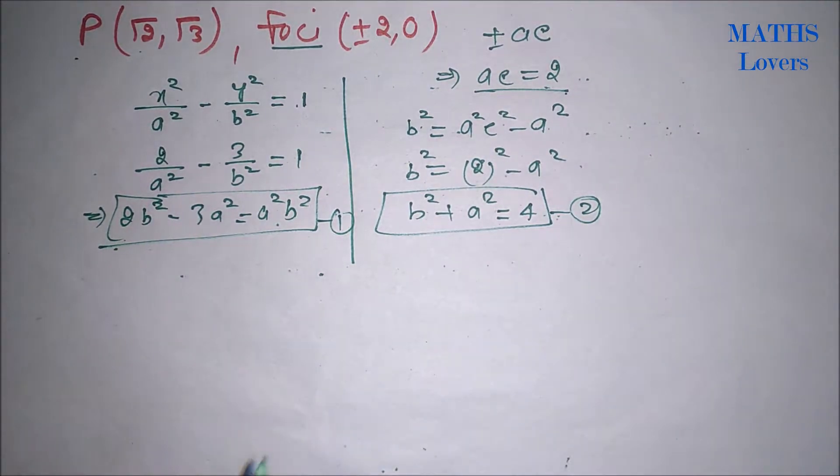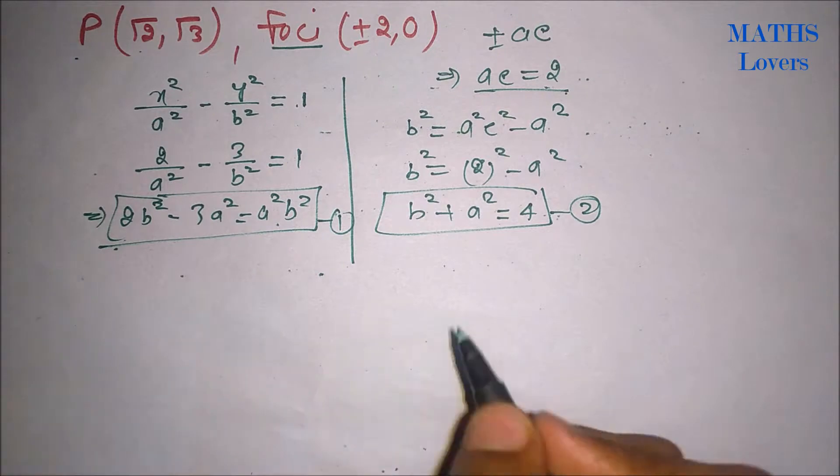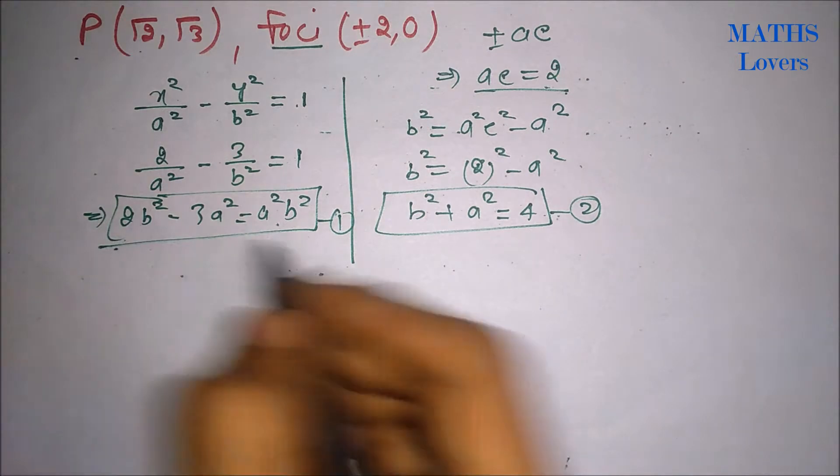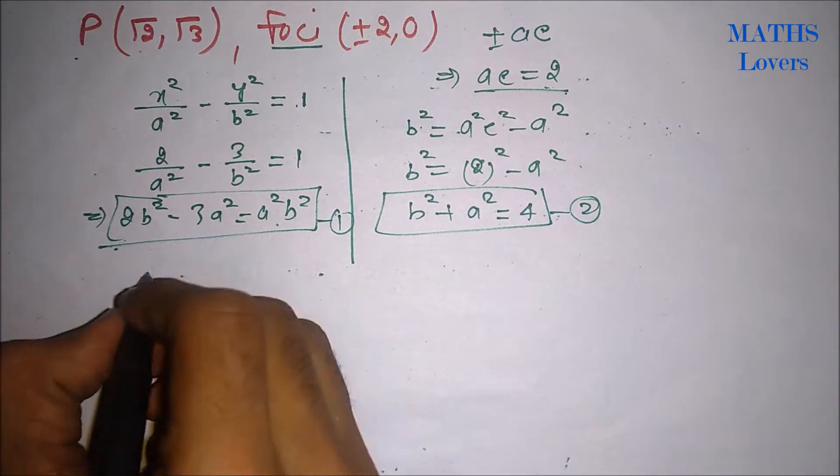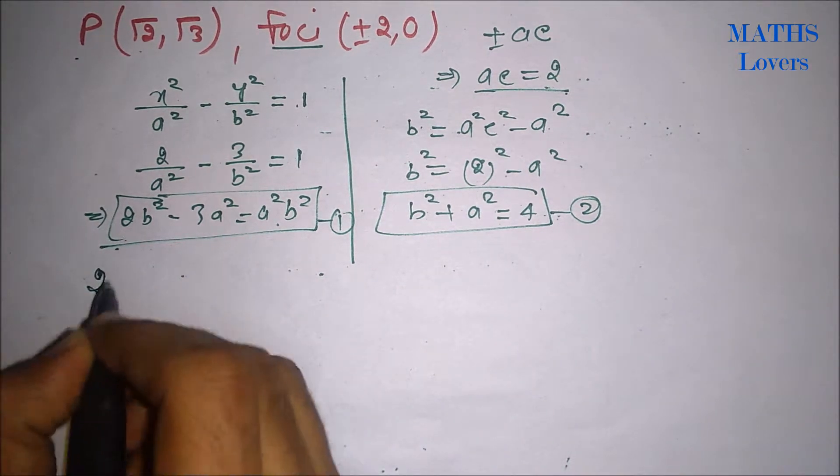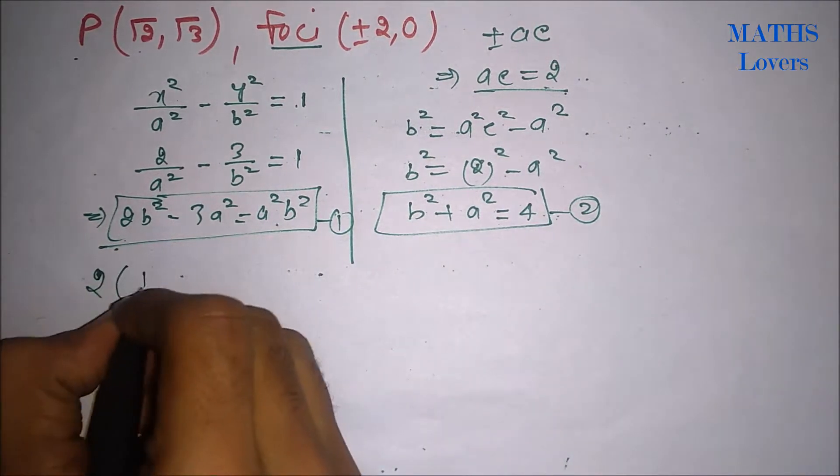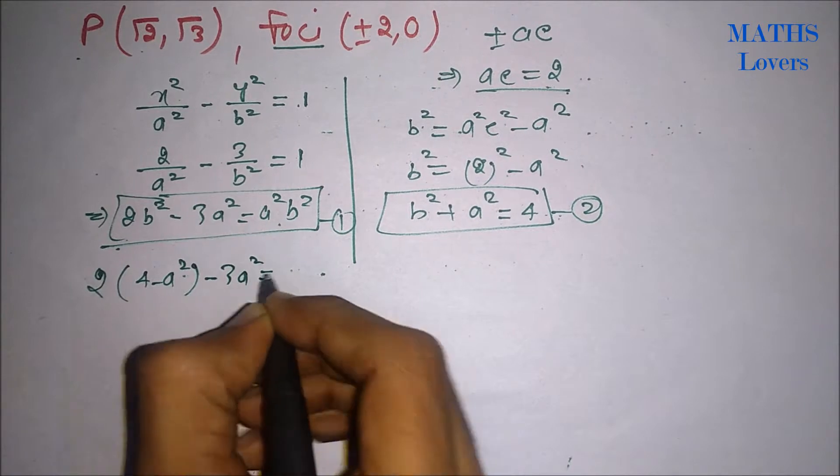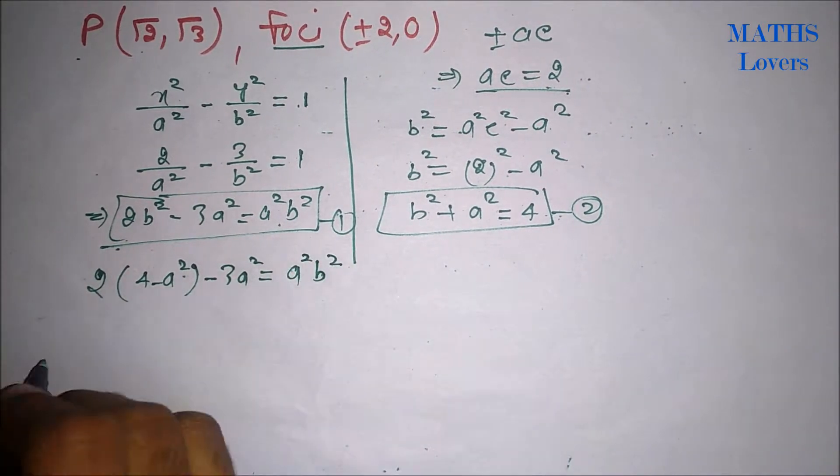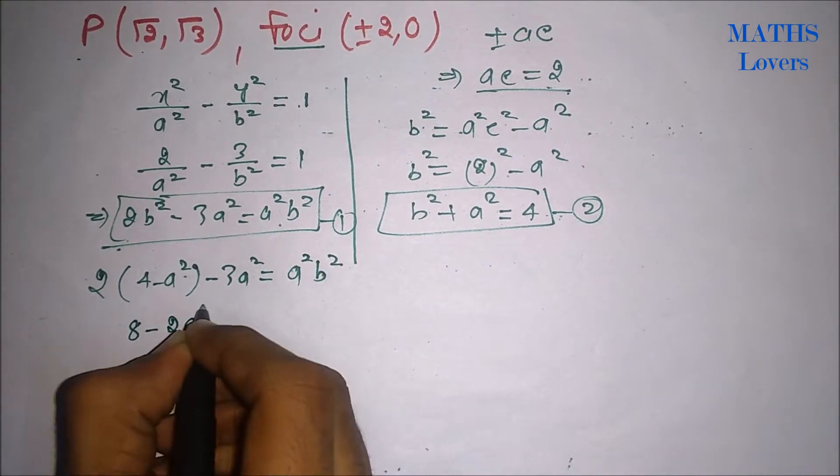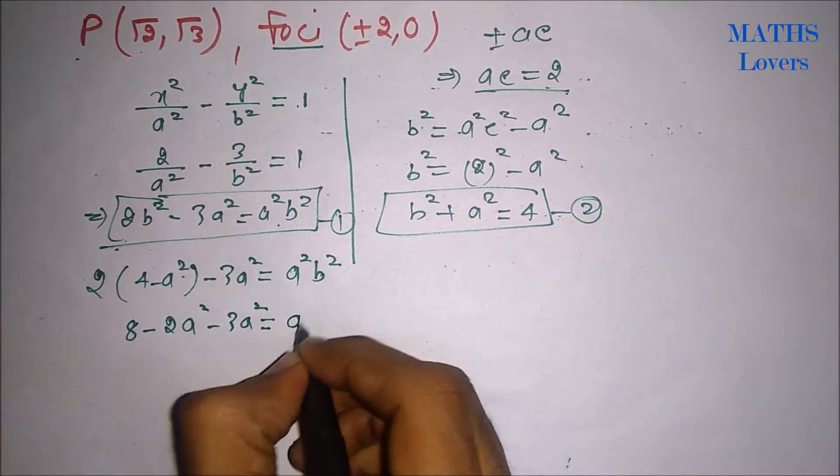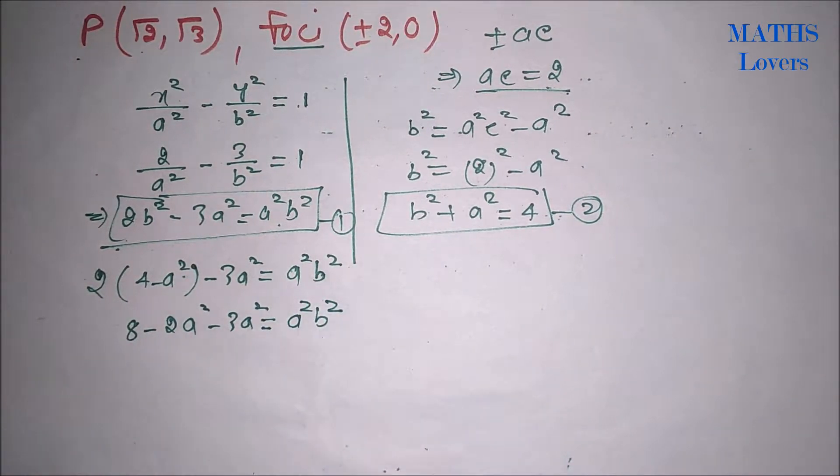Now, these are two equations. We can solve for a and b. What we are doing is putting a in terms of b, or b in terms of a here. Twice of b² will be 4 - a², so 2(4 - a²) - 3a² = a²b². It is 8 - 2a² - 3a² = a²b².